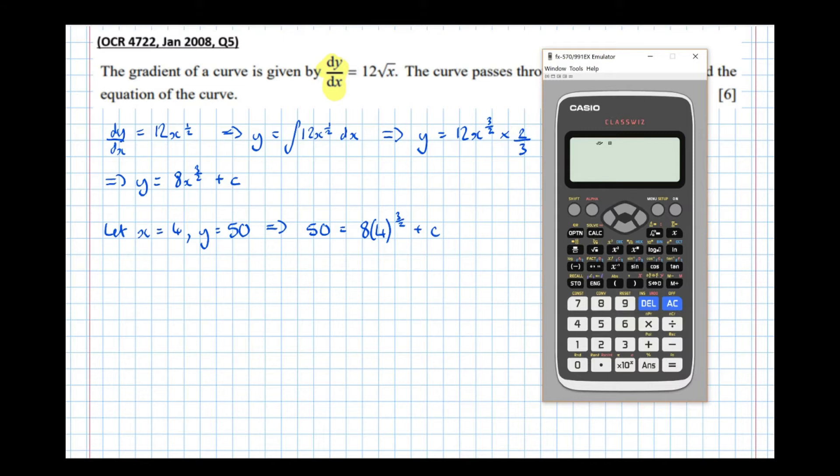We can probably do it without a calculator, but let's be safe. 8 times 4 to the power of 3 over 2 equals 64.